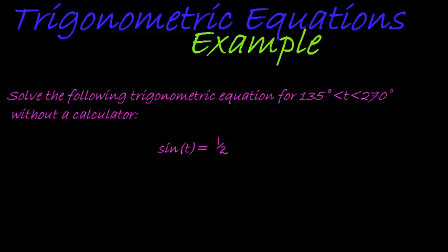In this question we are asked to solve a trigonometric equation given a specific interval. So what that means is that we have to find the specific solutions that will solve this equation. So we have that sine of t is equal to a half.